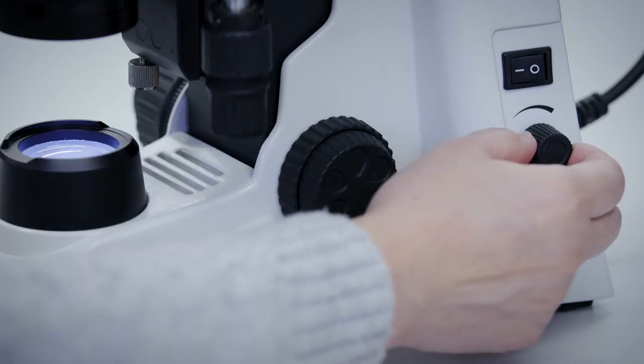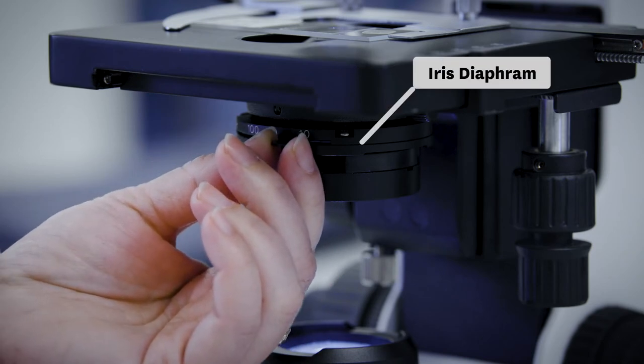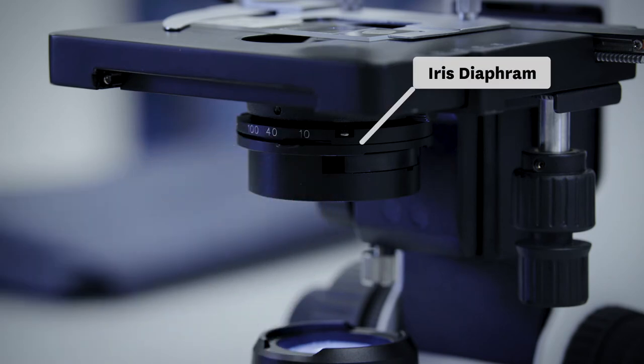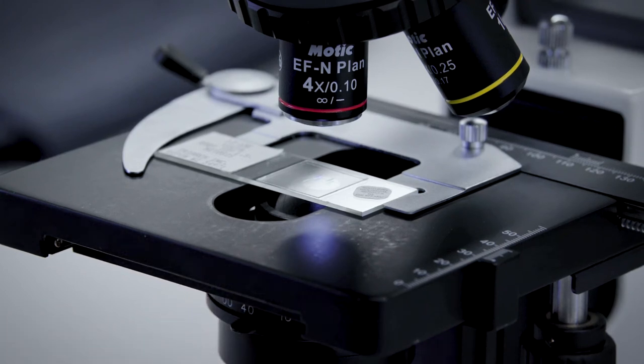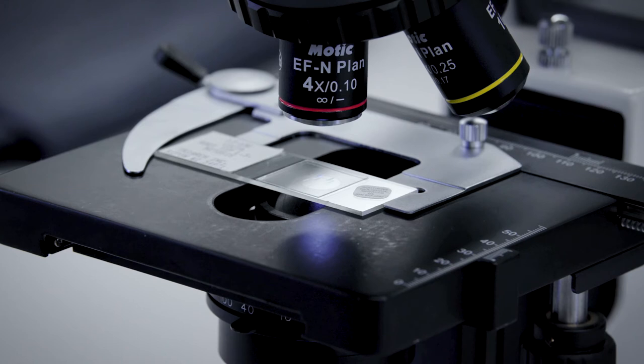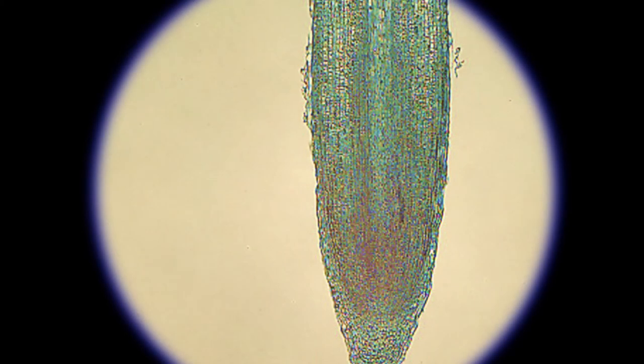You can adjust the light intensity with a light dial or with the iris diaphragm on the condenser. The lever on the condenser is used to open or close the iris diaphragm which controls the amount of light from the light source to the slide. Adjust the light until it gives you the best image.